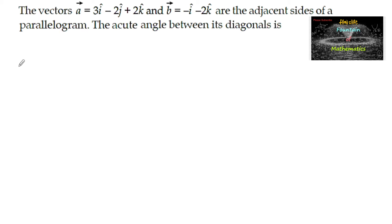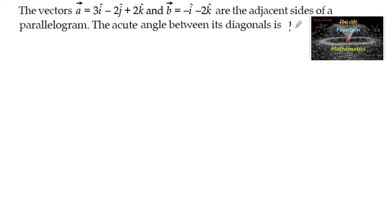Vector a is equal to 3i minus 2j plus 2k and vector b is equal to minus i minus 2k are the adjacent sides of a parallelogram. Then the acute angle between its diagonals is to be found.